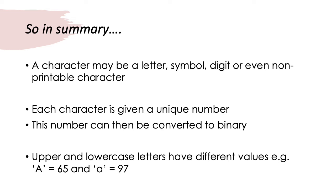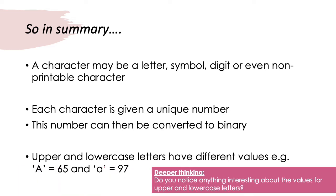Each character is given a unique number so that no two characters have the same number given to them. And this number can then be converted into binary, just as we have done in the past. Upper and lowercase letters have different values. For instance, capital A has the value 65. And lowercase A has the value 97.